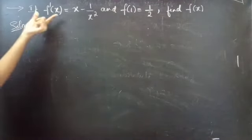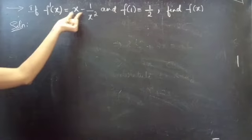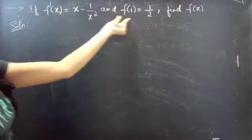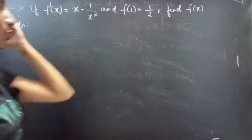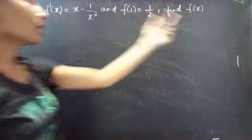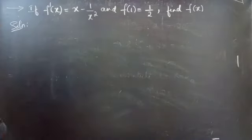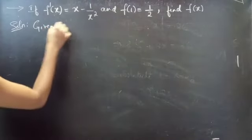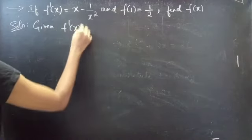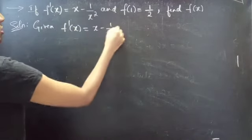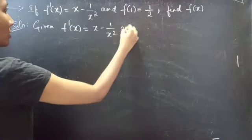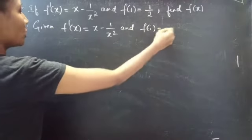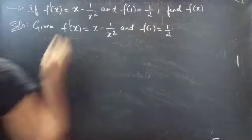Solution: we are given f'(x) equals x minus 1 by x squared, and f(1) equals 1 by 2. We have to find f(x). Given f'(x) equals x minus 1 by x squared, and f(1) equals 1 by 2.